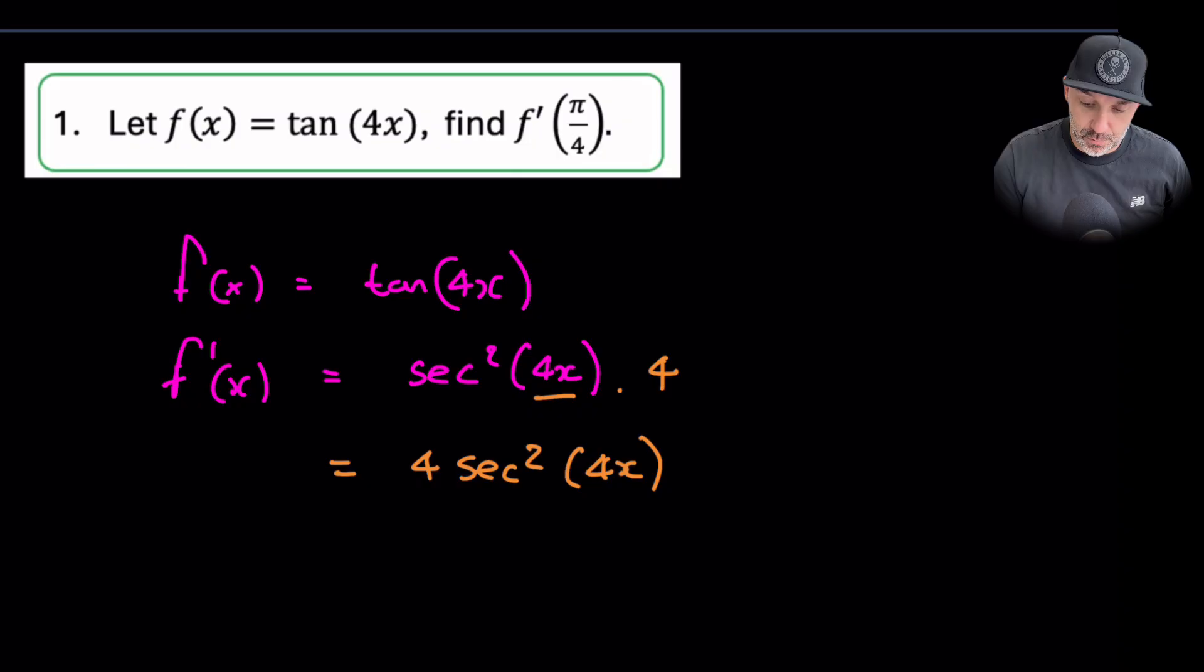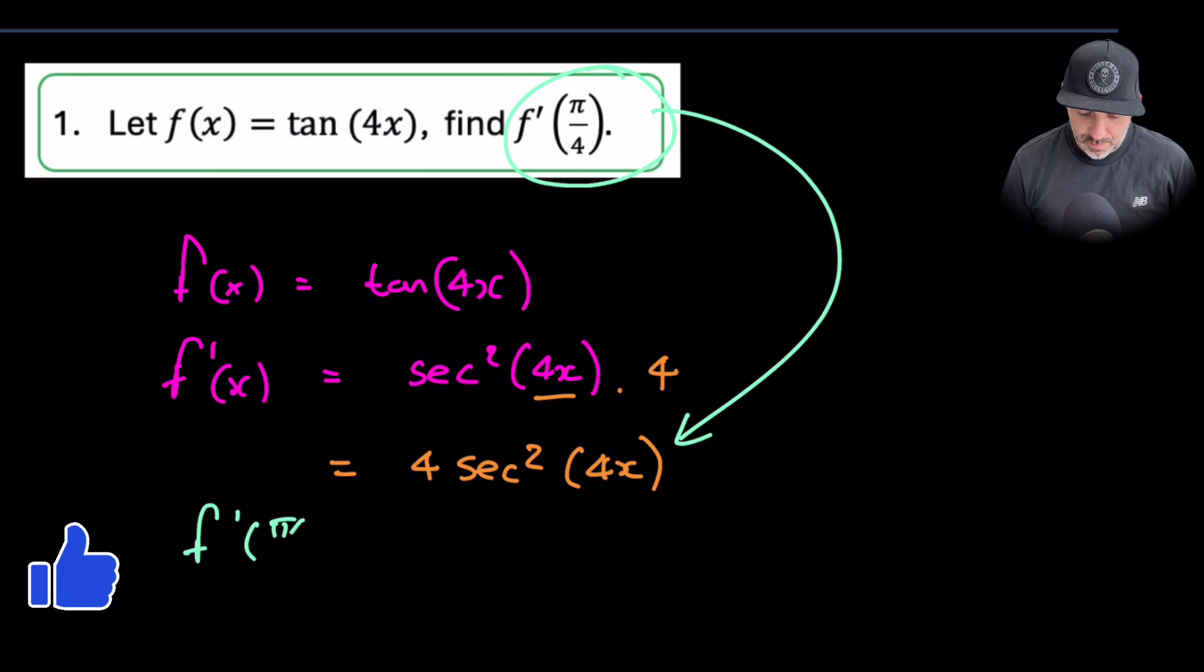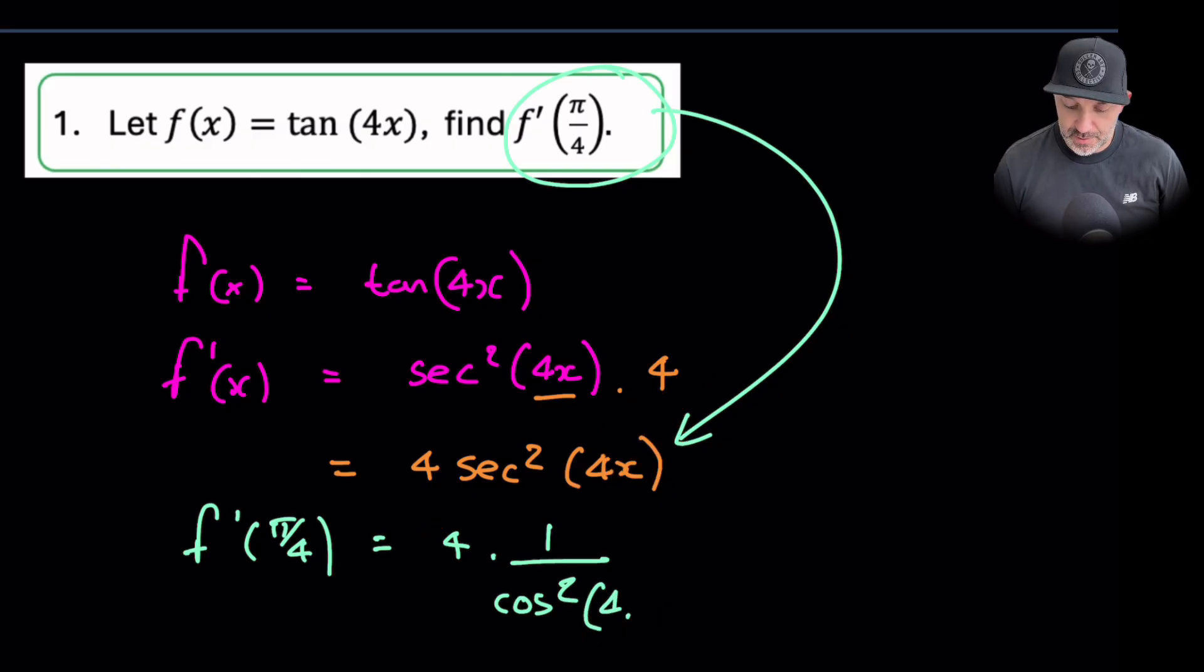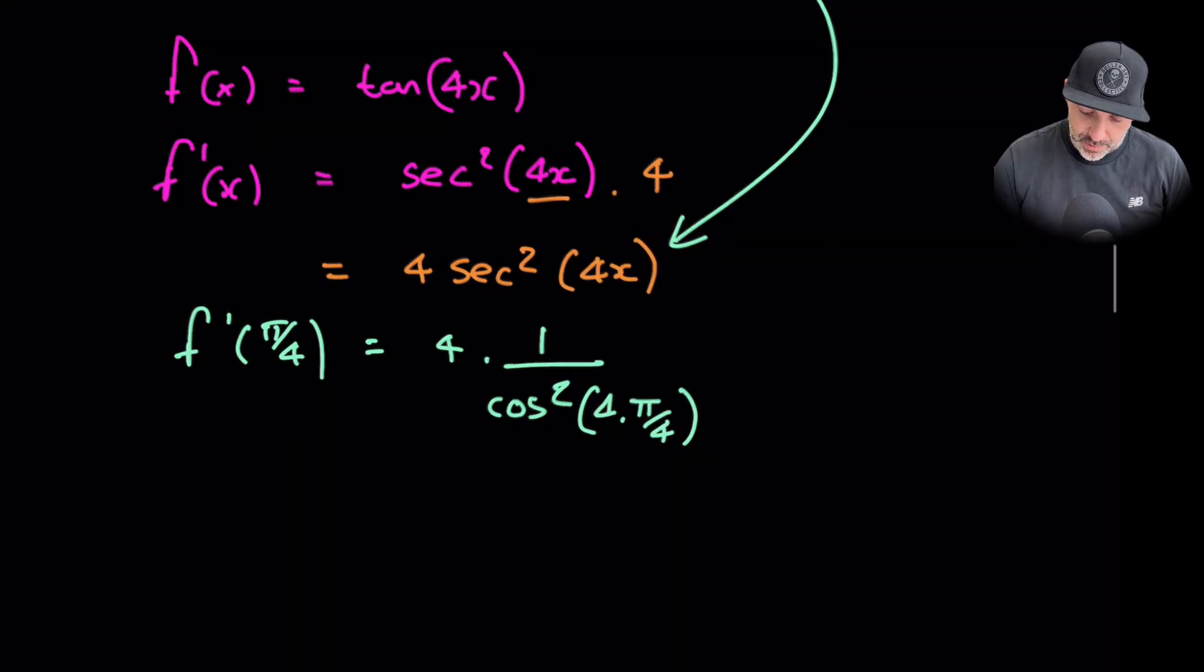But it does now ask us to find a value when we substitute pi over 4 in. So we've got f prime pi over 4 is equal to 4. Now I'm going to rewrite sec just like 1 over cos squared, and this is 4 times pi over 4. Now the pi, the 4s will cancel here.